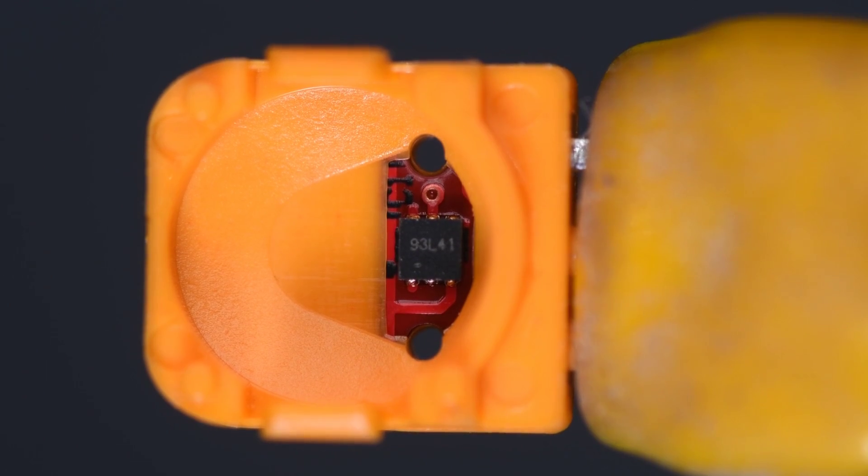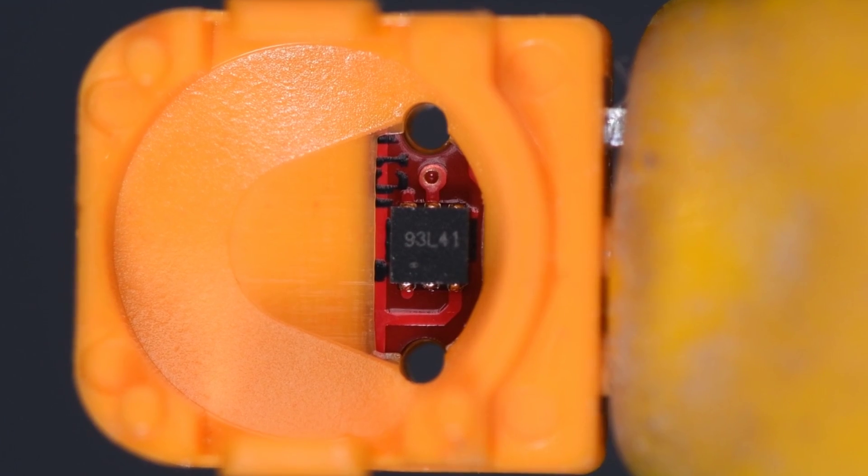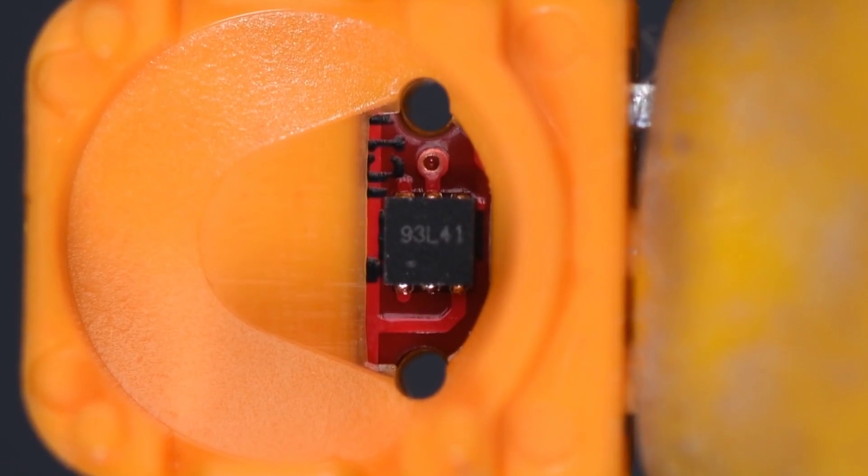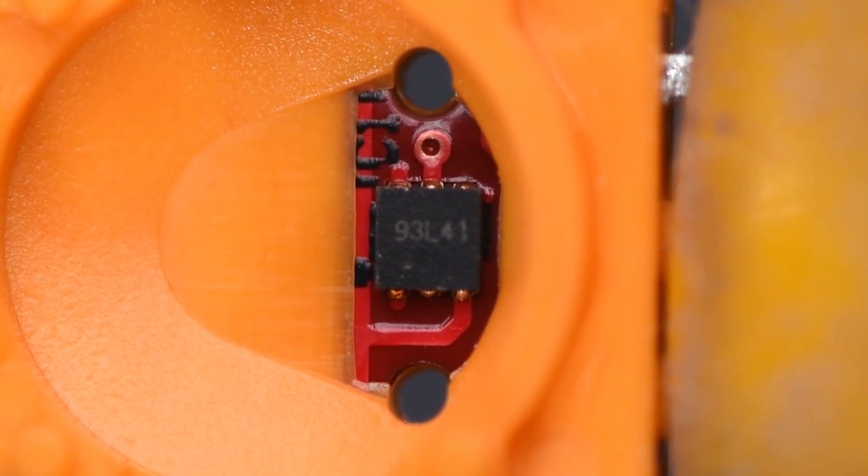But if I look inside one of the sensors from the GG Zone kit, the hall sensor is labeled 93L41. All the sensors in the GG Zone kit have 93L41 labeled ICs in them and L-4A printed on the PC board.